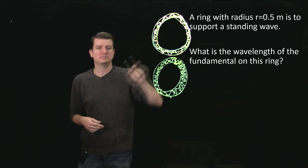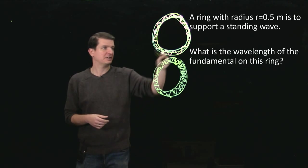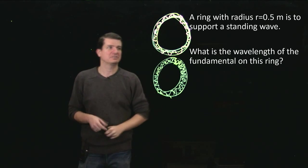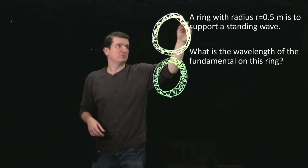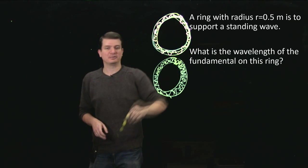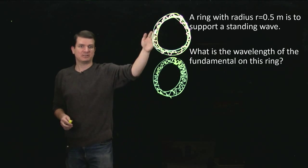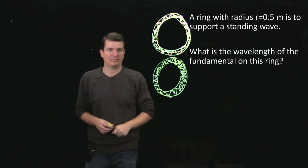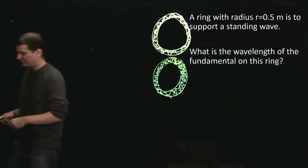Whereas these ones, the nodes are fixed. Those guys are always nodes. The anti-nodes are always anti-nodes. As I loop around, I move exactly along the same path. So those are standing waves. This one is not.